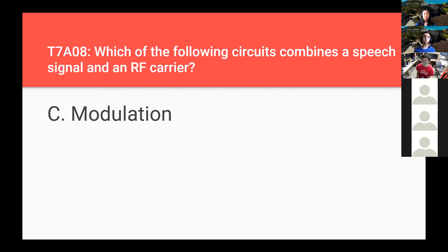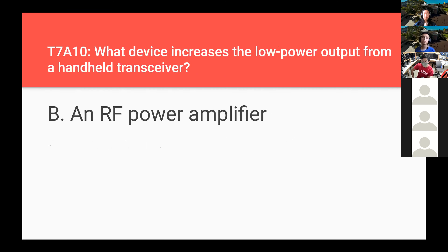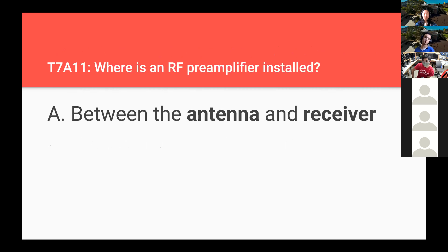The device that converts the RF input and output of a transceiver to another band is called a transverter. The function of the SSB/CW/FM switch on a VHF power amplifier is to set the amplifier for proper operation in the selected mode. The device that increases the low power output from a handheld transceiver is called an RF power amplifier. An RF pre-amplifier is installed between the antenna and the receiver — it's an amplifier before the receiver, hence the name pre-amplifier.